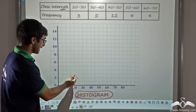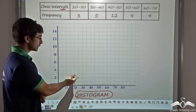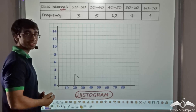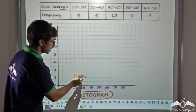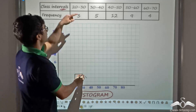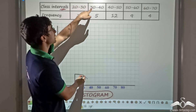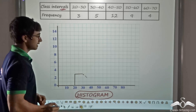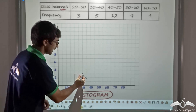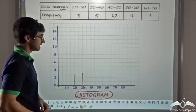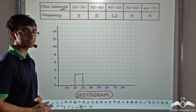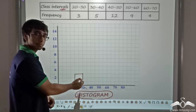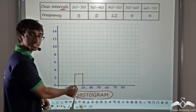For the first class 20 to 30, which has a frequency of 3, I start from 20 on the x-axis and go up to the point 3 on the y-axis. Now the bar of a histogram is not complete yet — I extend this line horizontally until the point where 30 is, which is the upper class limit for the first class and also the lower class limit for the next class, because it is a continuous distribution. I end the horizontal line at 30.